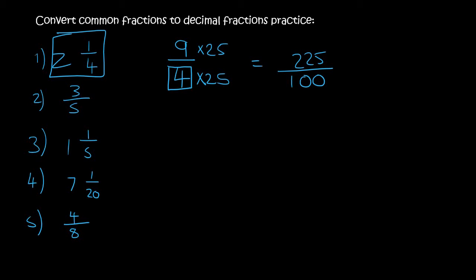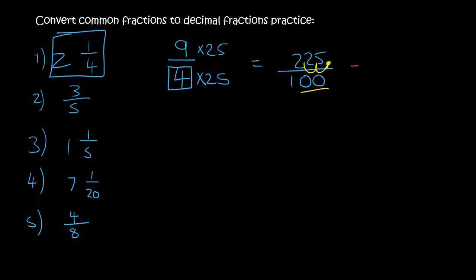You then look for the decimal — if you can't find it, it means it's at the back. There are two zeros, so you move it twice: 1, 2. And so your answer is 2.25.